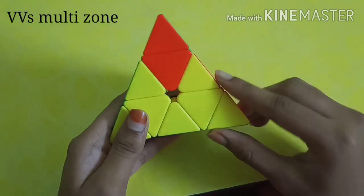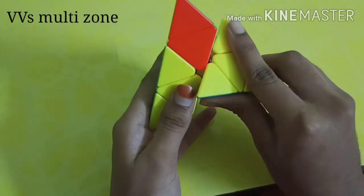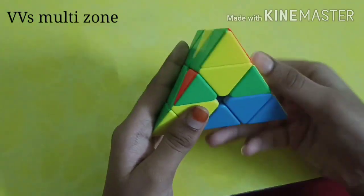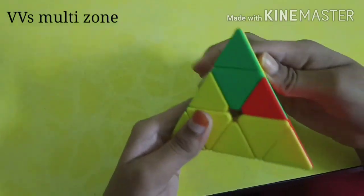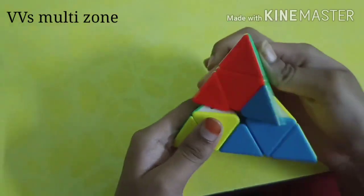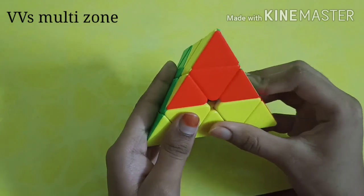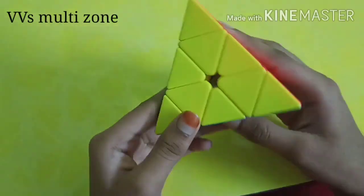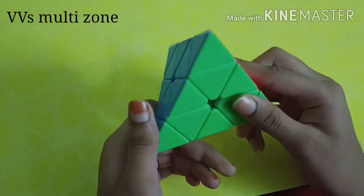The easiest way is you have to follow the second step, that is right, up inverse, right inverse, up inverse, right inverse, up inverse, and right inverse. You can see the cube, I mean the pyramid, is solved. This is the very easiest way you can solve the pyramid.